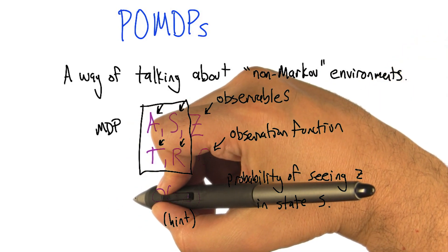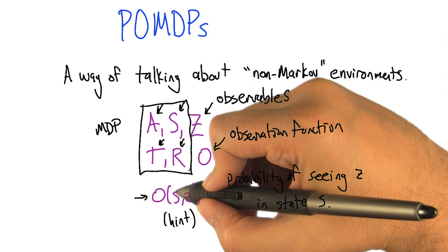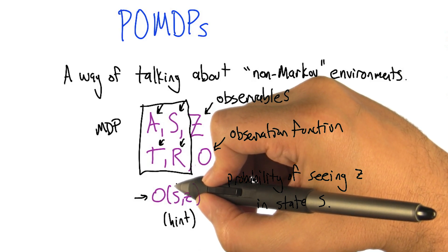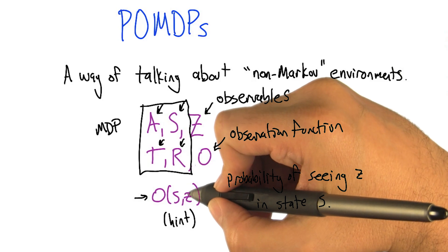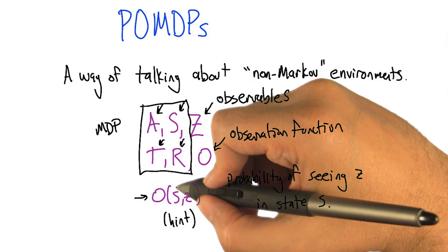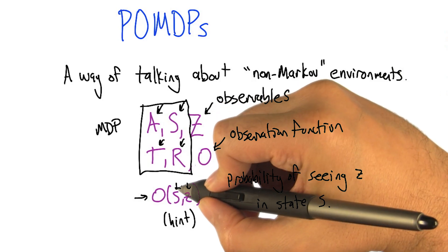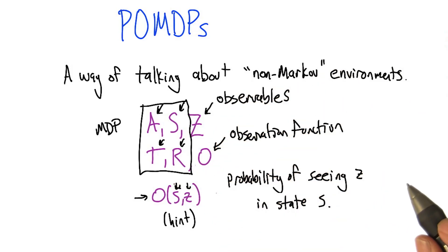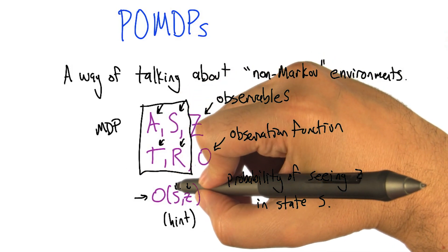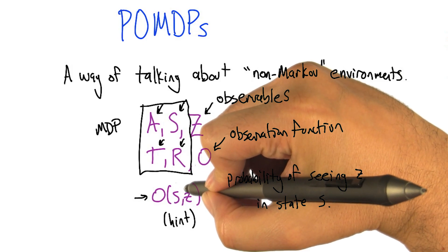So what I need is some kind of observation function. I need to be able to predict, given whether or not you have ice cream — so given you have ice cream, what's the probability you taunt me? Which is very close to one. And given that you don't have ice cream, what's the probability that you taunt me? That's much lower, but not zero. Well, you won't taunt me about ice cream when you don't have ice cream so much.